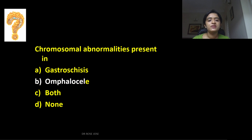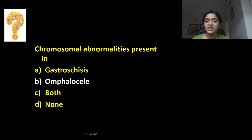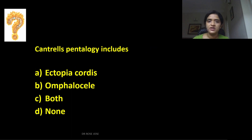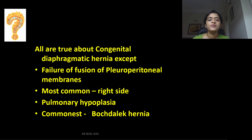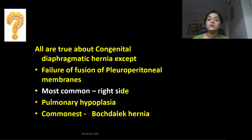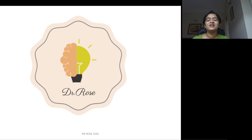Chromosomal abnormalities are present in omphalocele. Gastroschisis, though a defect of the anterior abdominal wall, will not be covered with amnion and you won't get chromosomal abnormalities. Cantrell's pentalogy includes ectopia cordis and omphalocele — both. Regarding congenital diaphragmatic hernia, the exception is that it is most common on the left side, not the right; and it causes pulmonary hypoplasia, not hyperplasia; the commonest type is Bochdalek hernia.